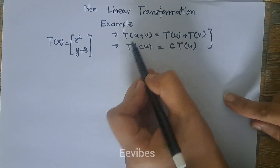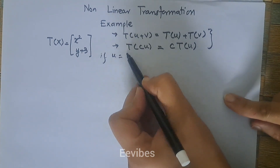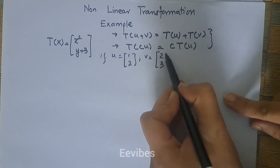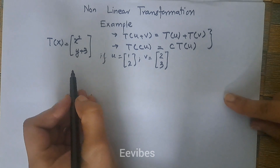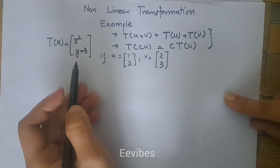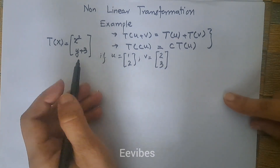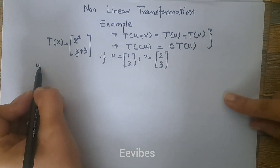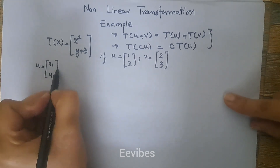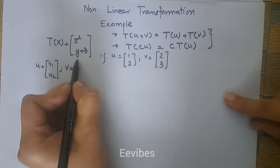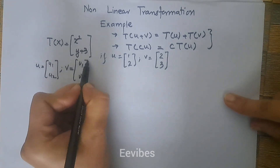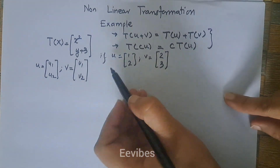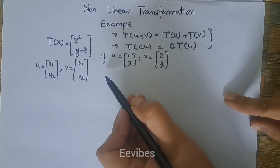Let's assume u = (1, 2) and v = (2, 3). We need to test whether this transformation rule is actually linear or not. We could also do this test for general vectors with components u1, u2 and v1, v2, but right now I'll use specific values because it's simpler to understand.